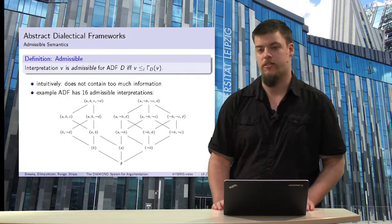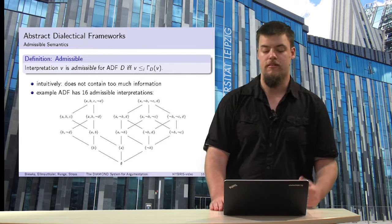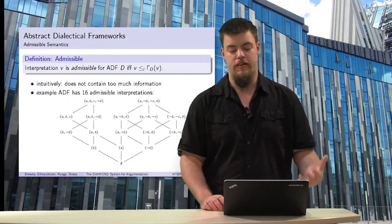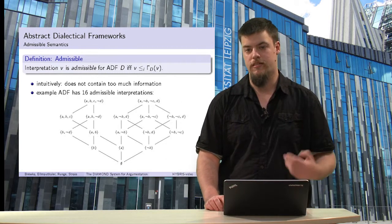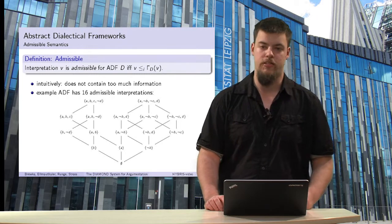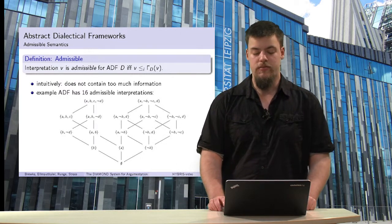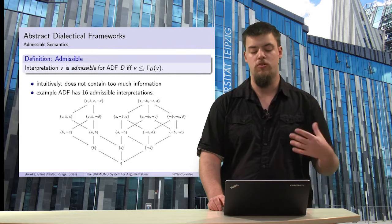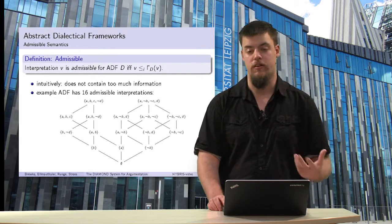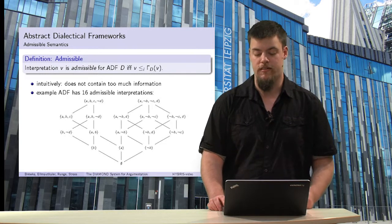Now we can look at further semantics. An interpretation is admissible for an abstract dialectical framework if and only if the information of the interpretation is equal to or less than the information of the interpretation resulting from one application of the characteristic operator. Intuitively, we do not want to contain too much information in one interpretation, so we use the notion of having equal or less information.